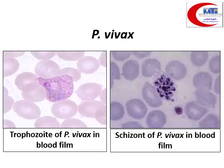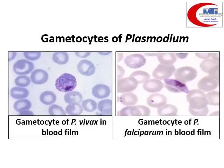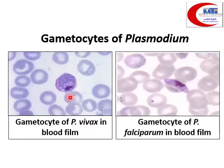The trophozoite and schizont belong to P. vivax — we can count the merozoites inside the schizont, which helps identify it. The gametocyte of P. falciparum is banana-shaped, while P. vivax gametocyte is circular in shape. Be careful not to confuse the P. vivax gametocyte with the schizont — in the schizont you can clearly count merozoites, while the gametocyte shows malaria pigment and many dots that cannot be counted.